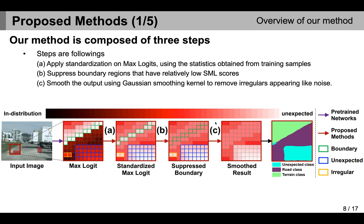Let me switch gears and talk about the summary of our proposed method. Our method is composed of three steps. First, we standardize the max logit by using the mean and variance obtained from the training samples. Then, we suppress the boundary regions since the boundary regions have relatively low SML scores. Finally, we remove the irregulars which work as noises by using the Gaussian smoothing kernel.